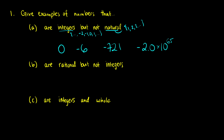For numbers that are rational but not integers: rational numbers can be written as fractions, while integers are whole numbers with no decimal points. So we need rational numbers with a decimal component — examples include 3/2 (which equals 1.5), negative 17/3, or negative 654/211. As long as it can be written as a fraction, it's a rational number.